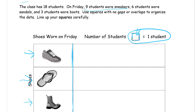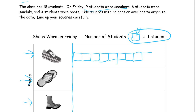Nine students wore sneakers, so that means I'm going to need nine squares. We'll try to make them: one, two, three, four, five, six, seven, eight, nine. It's not going to be perfect — just want them to look pretty much the same size and make sure there's no gaps or overlaps.